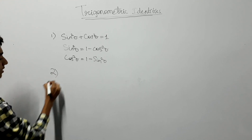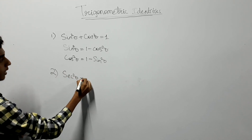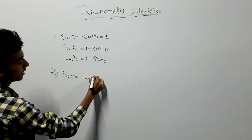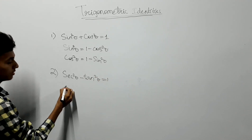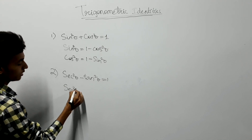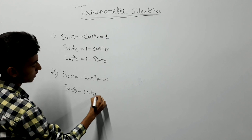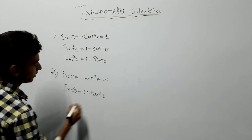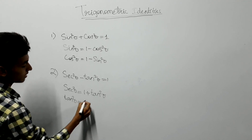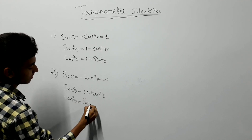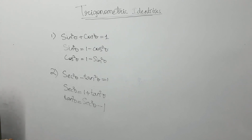The second identity is sec square theta minus tan square theta is equal to 1. From this, sec square theta can be written as 1 plus tan square theta, and tan square theta can be written as sec square theta minus 1. This is the second identity.